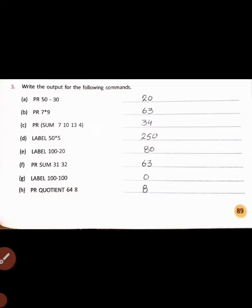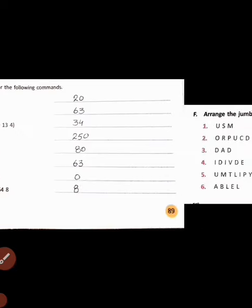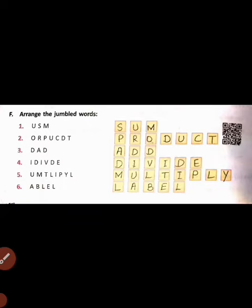Next, arrange the jumbled words. First one is SUM. Second, PRODUCT. Third, ADD. Fourth, DIVIDE. Fifth, MULTIPLY.